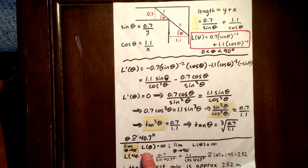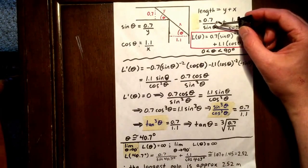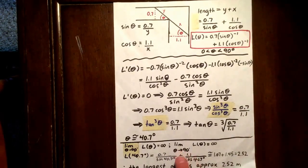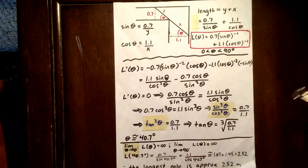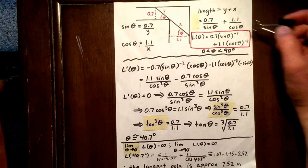So the limit as theta approaches 0 of L of theta is infinity, because we would have 0.7 over an infinitely small number. Similarly, the limit as theta approaches 90 of L of theta is infinity, because we would have 1.1 over an infinitely small number.